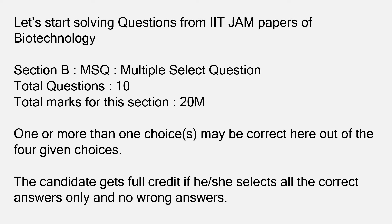In my last video I gave a question of MSQ type. There are MSQ type questions in the IIT JAM examination — this stands for multiple select question. In all there are 10 questions, one question is for two marks, so the total marks for this section is 20 marks. One or more than one choice may be correct, and the candidate has to select all the correct answers with no wrong answers to get full marks.